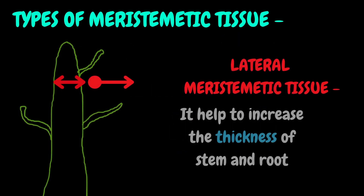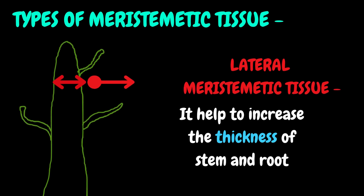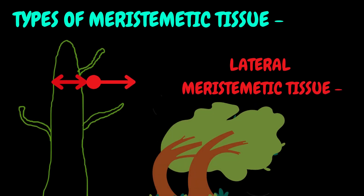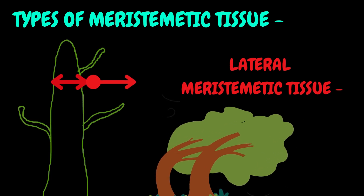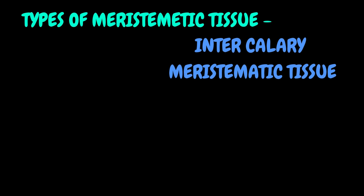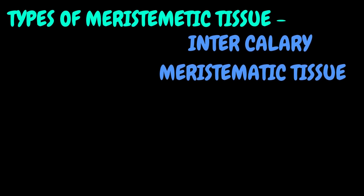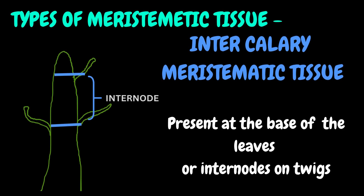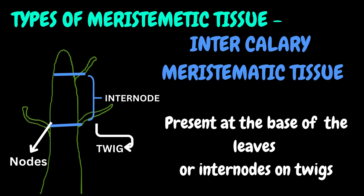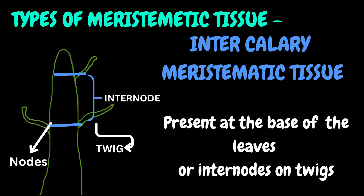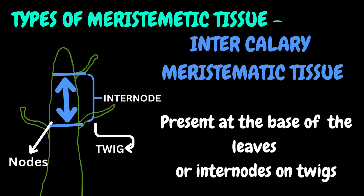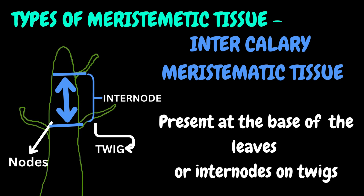On the other side, lateral tissue will help to increase the thickness of stem and root of the plant. Basically this increase in girth will give the plant strength. As if the plant will only grow upward but thickness does not increase, then in severe conditions it will not withstand and will break. Now the third type is the intercalary tissue. It is present at the base of the leaves, internodes or twigs. A twig is a kind of small branch that grows out from the main branch, having nodes from where new branches or leaves will be arranged. The part in between two nodes is the internode, and it is the job of intercalary tissue to grow that part and increase the internode distance.